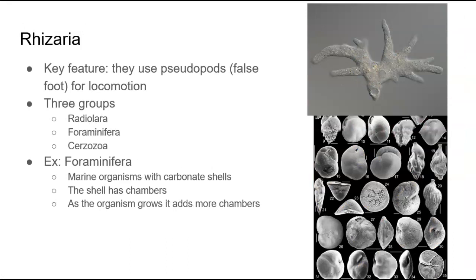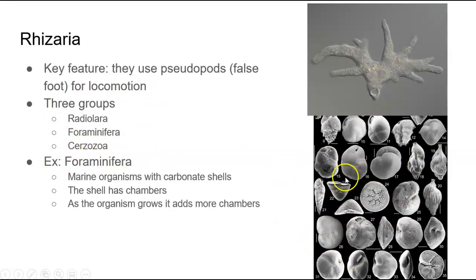The next supergroup is rhizaria. A key feature for this supergroup is that the organisms are going to have pseudopods — this is a false foot; pseudo is false and pod is foot. They're going to have these extensions that kind of look like feet, which help them with movement and locomotion. There are three groups within this supergroup: radiolaria, foraminifera, and cerisozoa. Foraminifera are more marine organisms with carbonate shells that have chambers, and as these organisms grow they add onto their chambers.